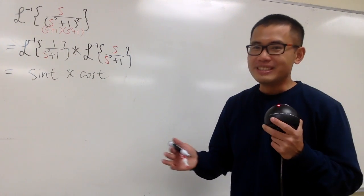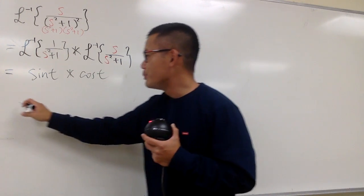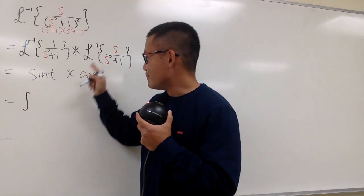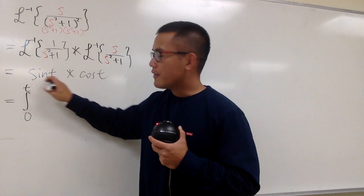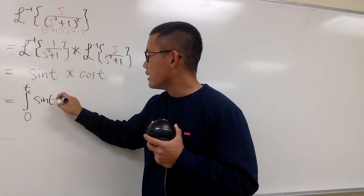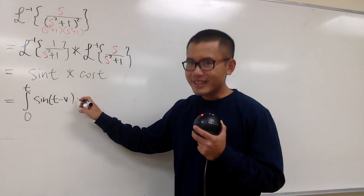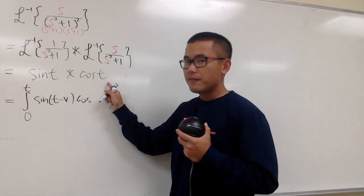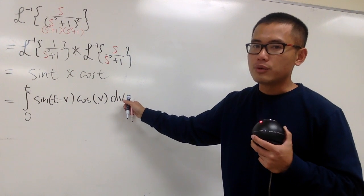It will be much easier when we use the convolution theorem backwards. Now this is perhaps the harder part, because we have to work out the convolution, which is going to be an integral. By the definition of convolution, it's from 0 to t, and this is the first function. We will plug in t minus v into the first function, so we have sine(t − v), and we multiply with the second function, cosine v. This is integrated with respect to v.